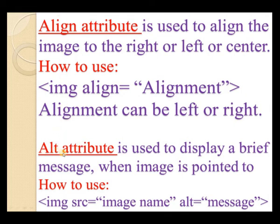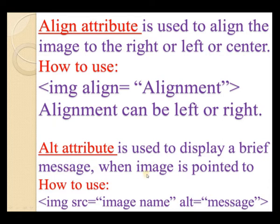The alt attribute is used to display a brief message when the image is pointed to. That means when we move the mouse pointer over the image, it will display a message. As soon as the mouse pointer is moved away, the message disappears.